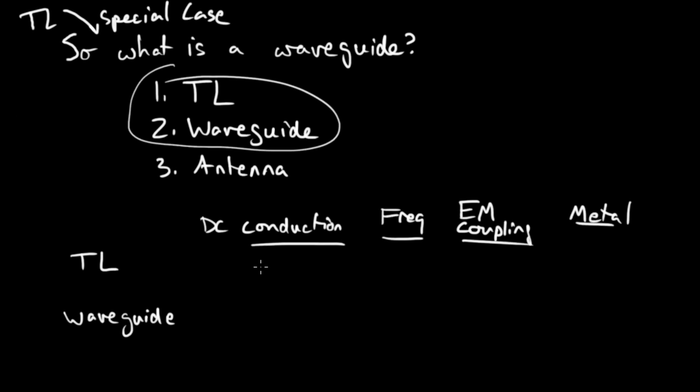So DC conduction, for a transmission line, can it accommodate DC conduction? Yes, because it's a pair of metal lines with a dielectric between them. So you could send a signal in here and then receive it back here, and the electrons can actually move in that system.